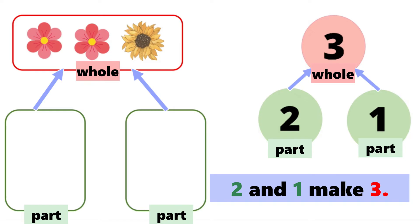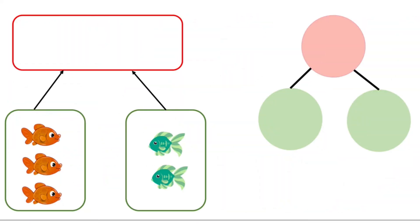Let's look at another example. There are two groups of fish. Some are orange. Some are green. How do we fill in the number bonds?